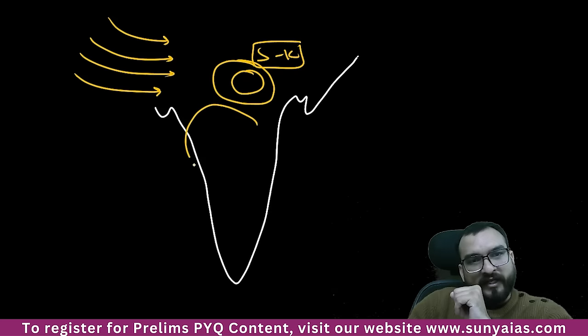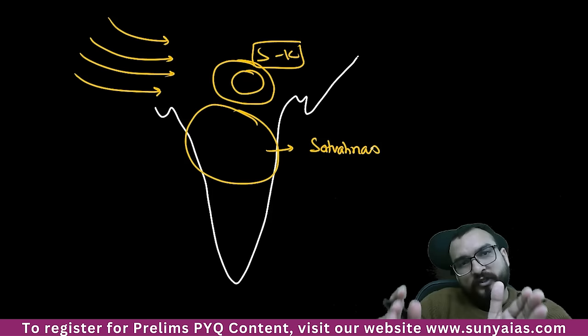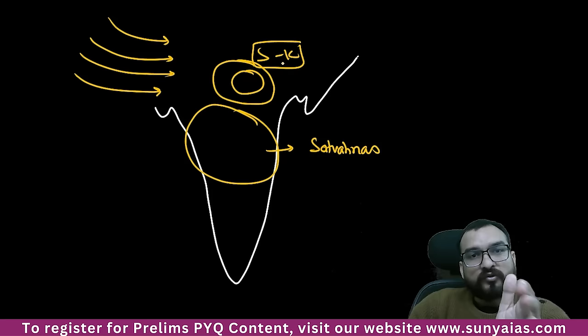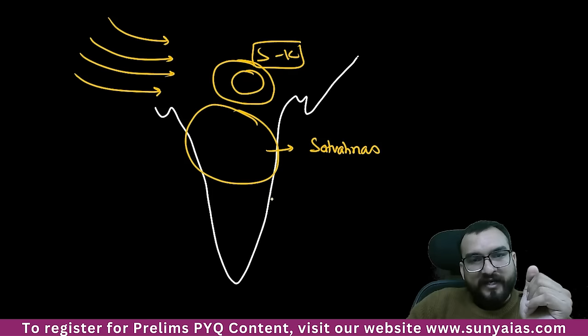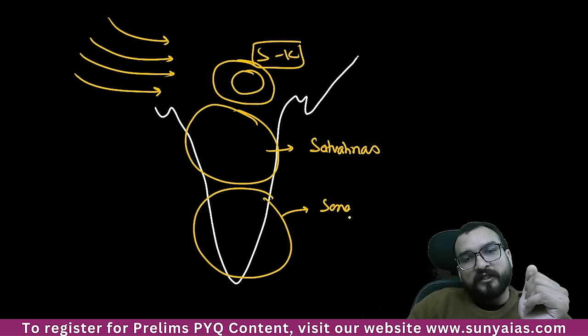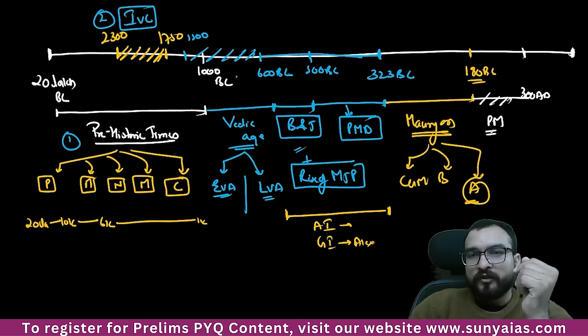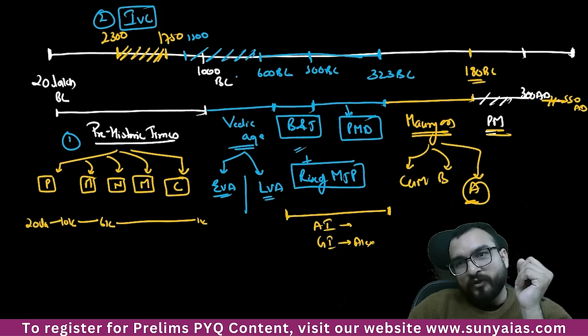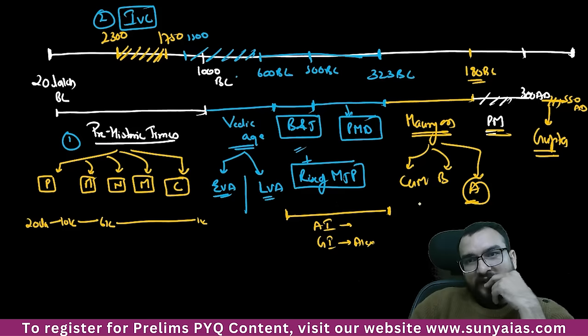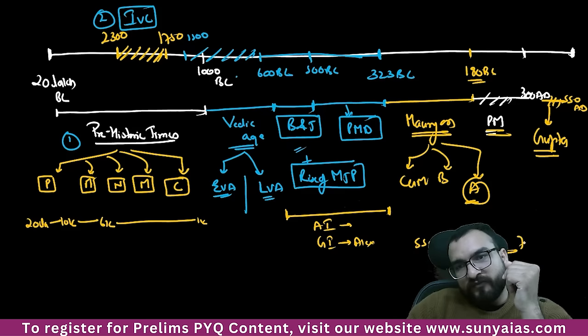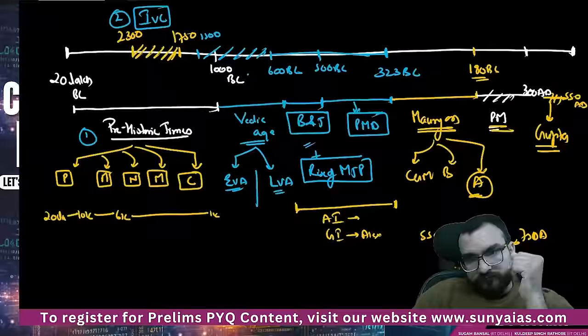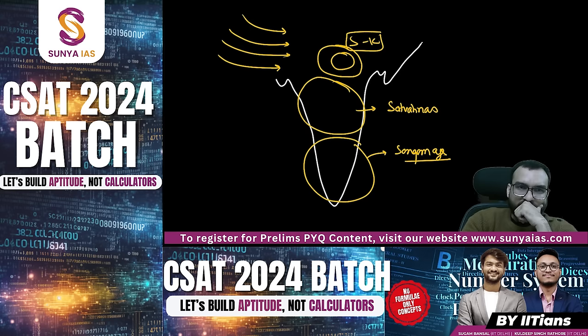Whenever India becomes internally weak, attacks happen in the form of Indo-Greeks, Shakas, Parthians, and Kushanas. In the Deccan, a new political identity — the Satavahanas — will appear. When you have these things on your tips, you understand that Satavahanas were contemporary of Sungas and Kanavas, not of Pallavas and Chalukyas, not of Harsha, not of Guptas. In Southern India, history is constructed from the Sangam age in the form of Chera, Chola, and Pandya. Then from 300 to 550 CE, you understand the Gupta Empire. From 550 CE to 750 CE, you understand the Harsha Empire. In my class, I also take you through maps — maps are of utmost importance.